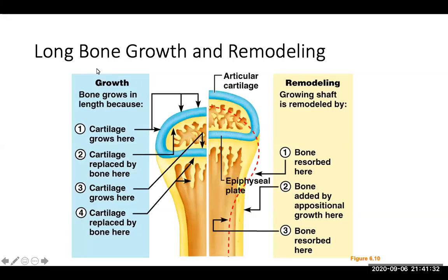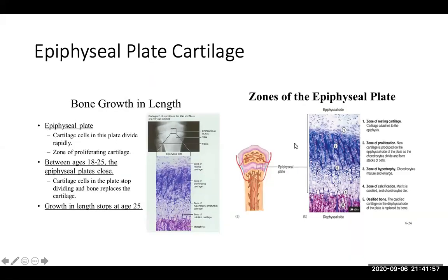In long bone growth and remodeling, cartilage grows at the epiphyseal plate and is then replaced by bone, repeatedly. Remodeling occurs along the growing shaft where bone is resorbed and then added by appositional growth. Bone growth in length occurs in zones of the epiphyseal plate, progressing from resting cartilage to proliferation, to hypertrophy, to calcification, until we get to ossified bone.